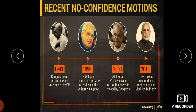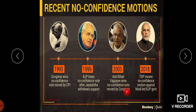The recent no confidence motions: in 1993, Congress won the no confidence vote moved by the CPI. In 1999, the BJP lost the no confidence vote after Jayalalithaa withdrew support. In 2003, Atal Bihari Vajpayee won the no confidence vote moved by Congress.